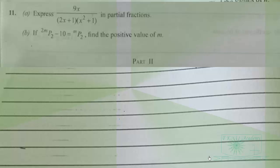We are still on the elective mathematics for 2024, paper 2, May, June. So we have question 11 here. We are to express 9x over (2x + 1)(x² + 1) in partial fractions.